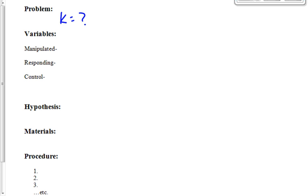What's my manipulated variable? What am I changing in this activity? I'm changing the mass, which indirectly means I'm changing the force, right? Because the reason I'm putting mass on there is so that I can change the value of the force. So what's my manipulated variable? The force. What's my responding variable? What changes because I changed the force? The displacement. It's going to be x, right?